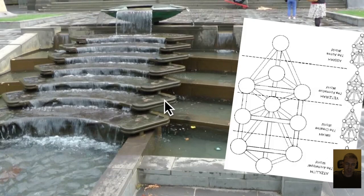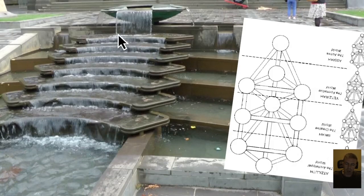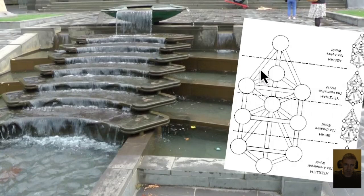Here is another view of the Kabbalah Tree of Life that is perhaps more representative of the flow of the fountain as it compares with the Tree of Life. I'm suggesting that these three divisions here correspond to those divisions there, so we'll just keep moving on.